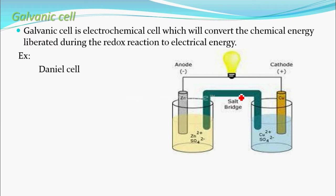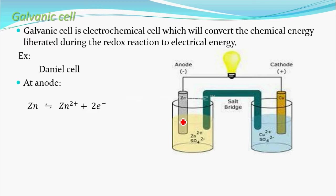At the anode, zinc undergoes oxidation — oxidation is the liberation of electrons. Zinc oxidizes into Zn²⁺ and releases two electrons. The Zn²⁺ ions go into the solution, and the two electrons pass through the external circuit to reach the copper cathode.